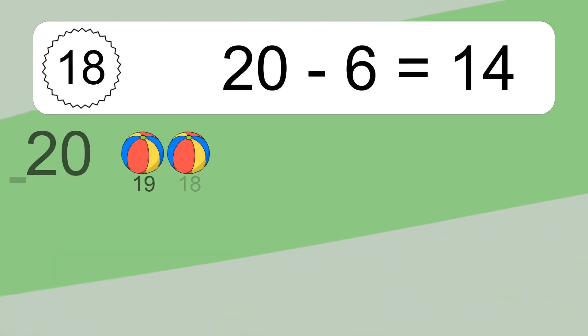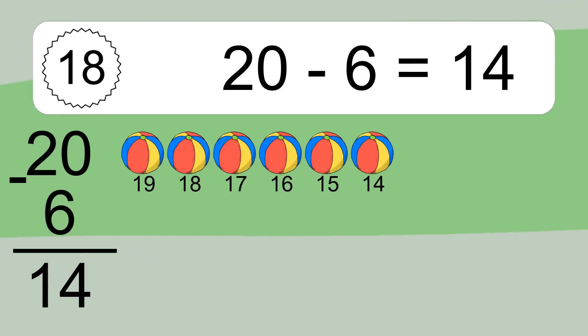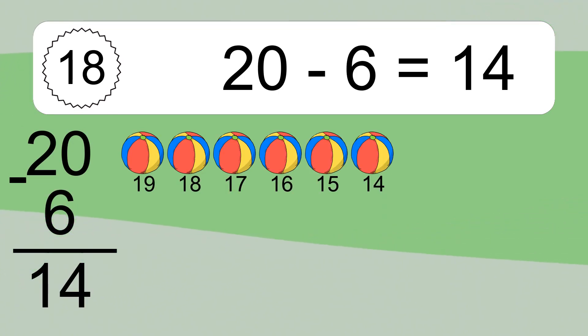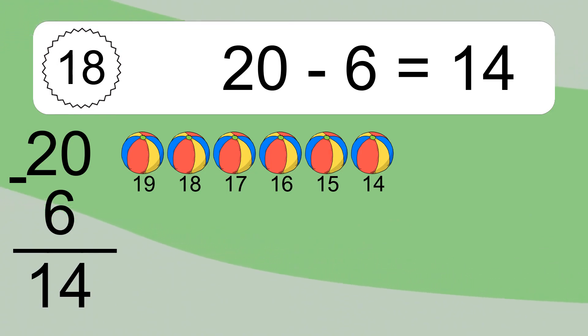20 minus 6 equals 14. Let's count it: 19, 18, 17, 16, 15, 14.